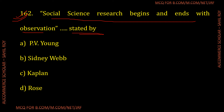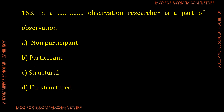Question number 162: Who stated that social science research begins and ends with observation? The options are P.V. Young, Sydney Tisera, Kaplan, and Rose. The correct answer is Sydney Webb — Option B is the correct answer for the given question.